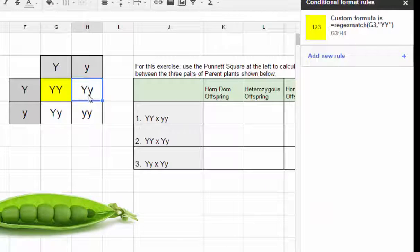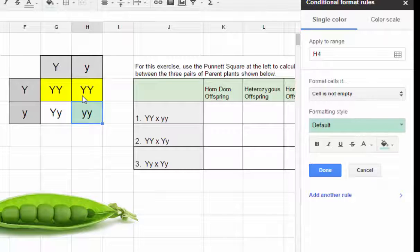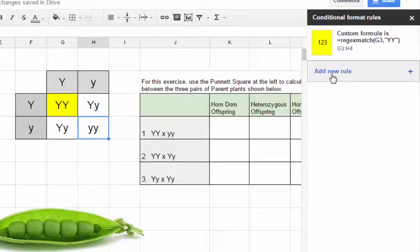Now if I type YY with both capitals it will now be yellow. So then we just create a rule matching that but for the other outcomes. All we have to do is add a new rule for these other cells.